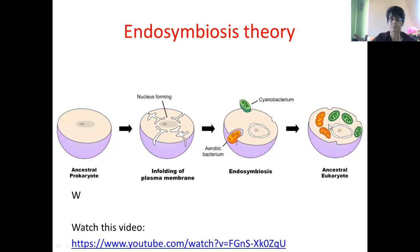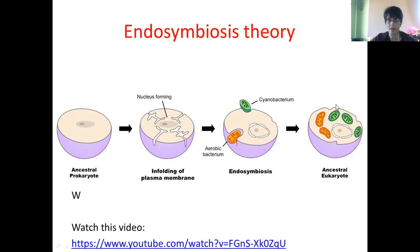Here's a cyanobacterium — a simple bacterium that would have contained chlorophyll — and it was also engulfed, and some of them weren't destroyed. So here it's got one membrane and it ended up having two membranes, also having its own DNA and ribosomes, and therefore can make its own enzymes to control photosynthesis.